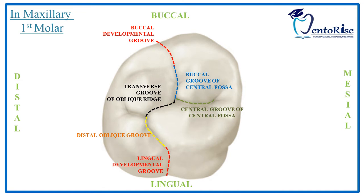This distal oblique groove then turns itself towards the lingual surface of the tooth, thus marking the lingual developmental groove. As we read in the video of the cusps, maxillary first molar has a fifth cusp called as the cusp of Carabelli. This fifth cusp is also demarcated by a groove which is called as the fifth cusp groove, marked in the figure in brown.